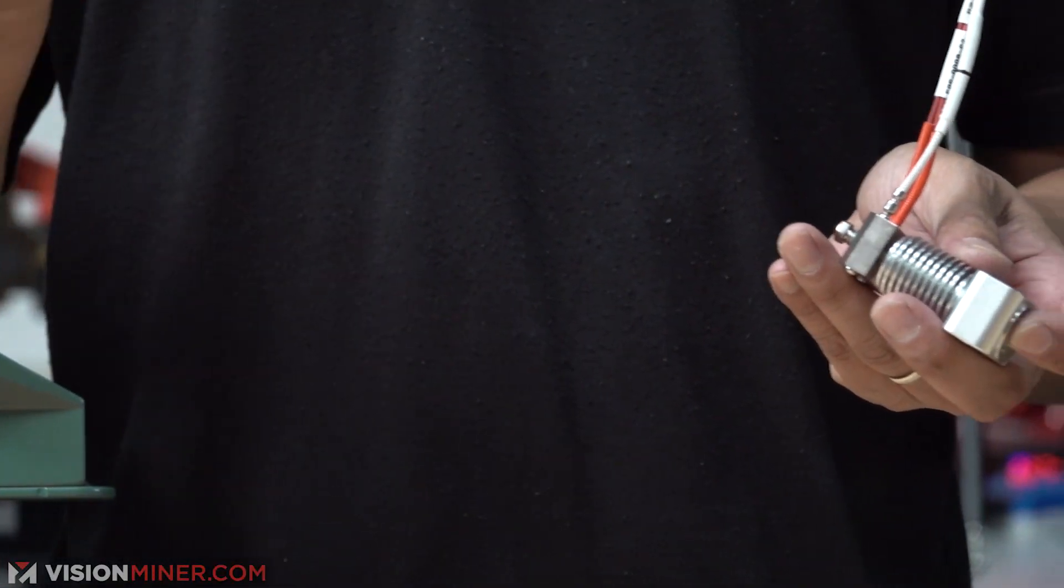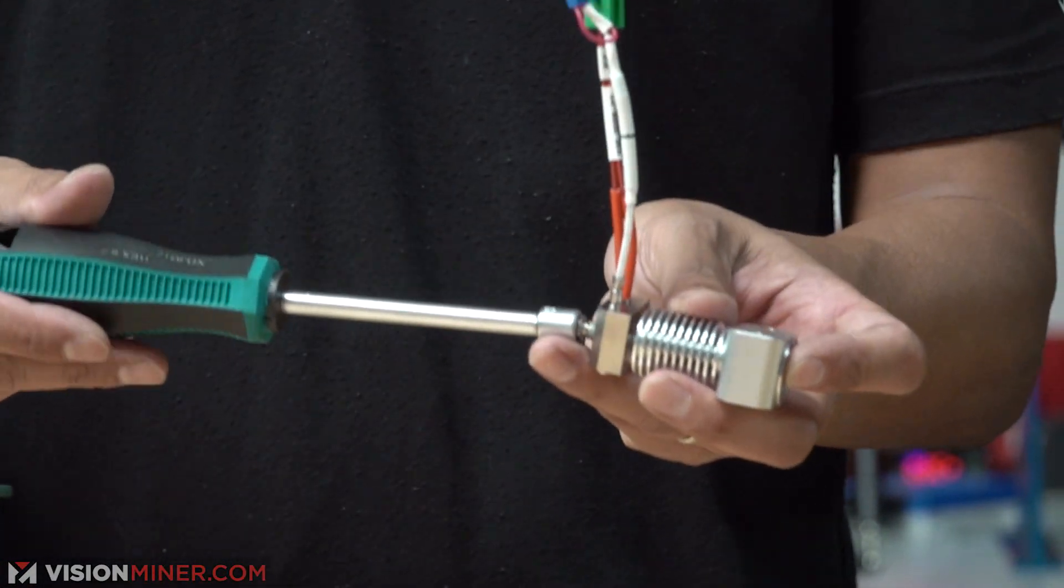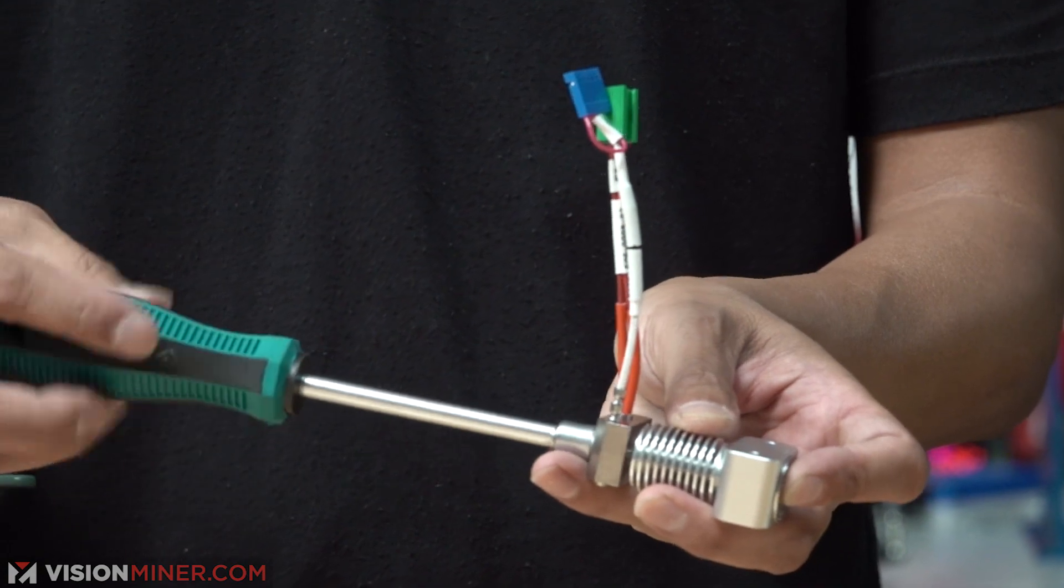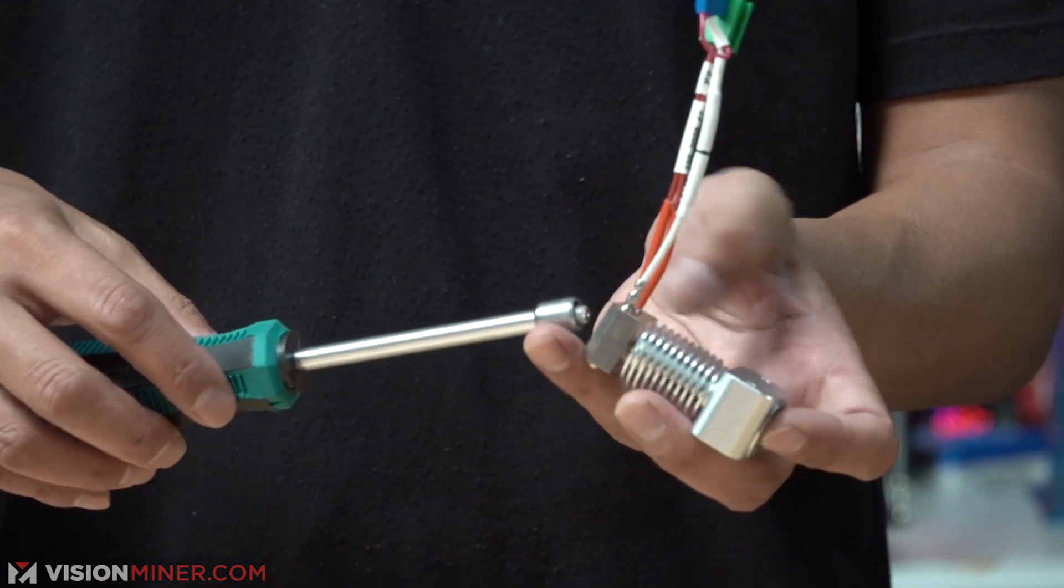Okay, first of all, we'll take the 7mm nut driver onto the nozzle. Spin it counterclockwise, of course. Nozzle, take that out.